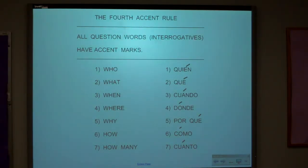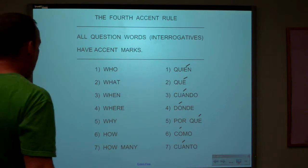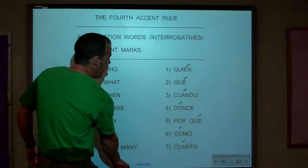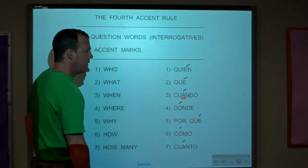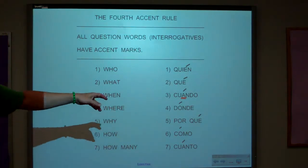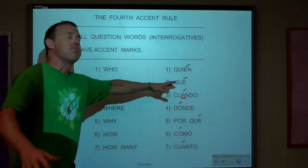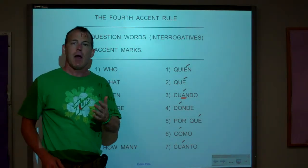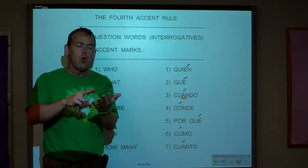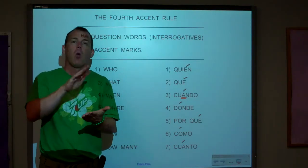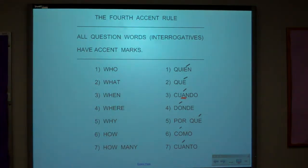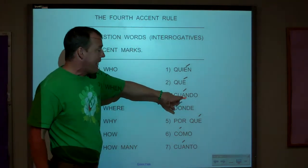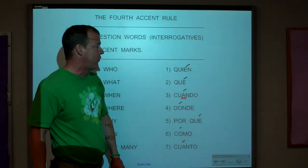But Mr. Hall, I don't understand. On cuándo, the A is the next to last vowel, and it ends in a vowel and an S. Here's the deal: anytime you're asking who, what, when, where, why, or how, you have to have an accent mark — even if, like cuándo, it is the next to last vowel.